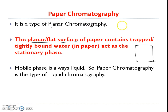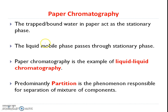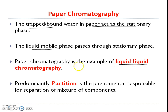In paper chromatography, the mobile phase is always liquid, so it is also called a type of liquid chromatography. As the trapped or bound water in paper acts as a stationary phase and the mobile phase is also liquid, it is an example of liquid-liquid chromatography.